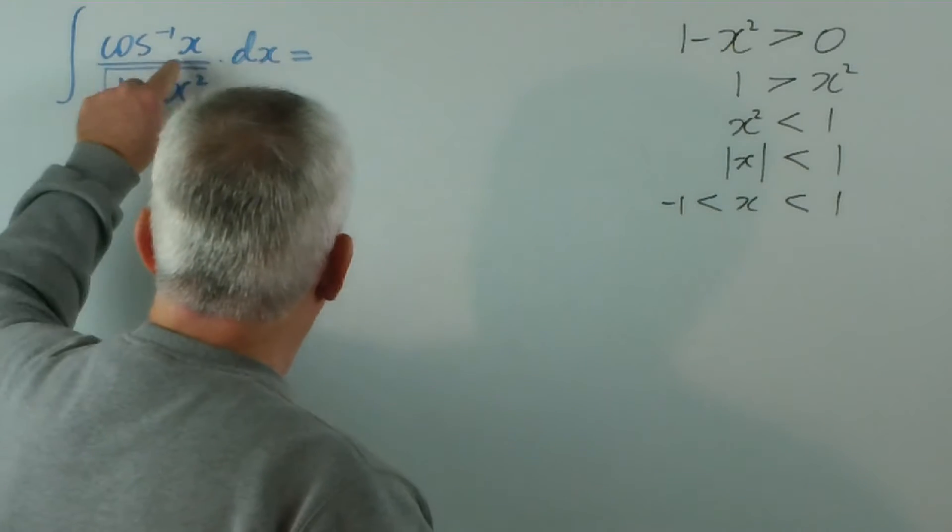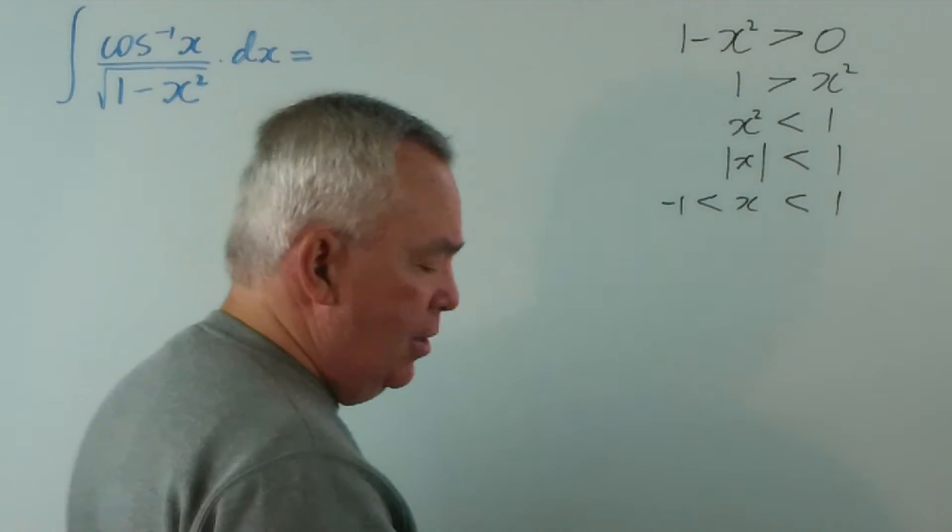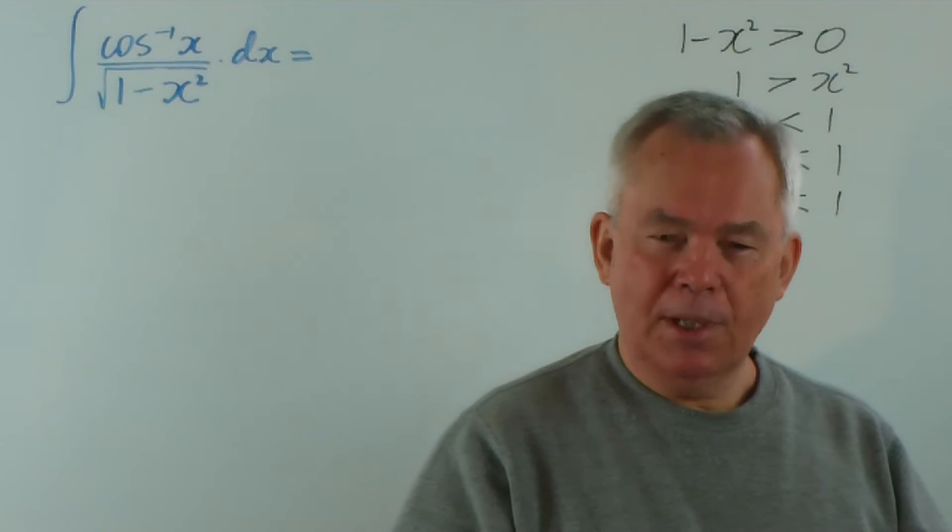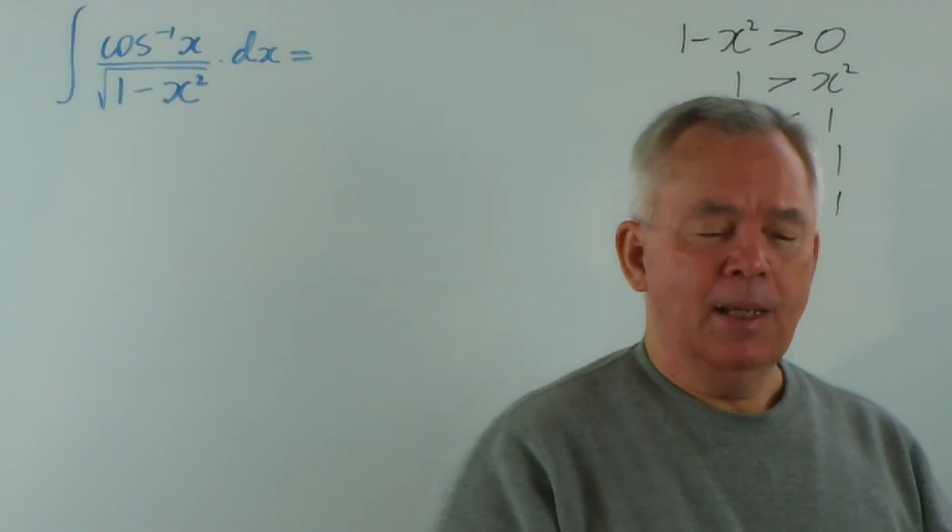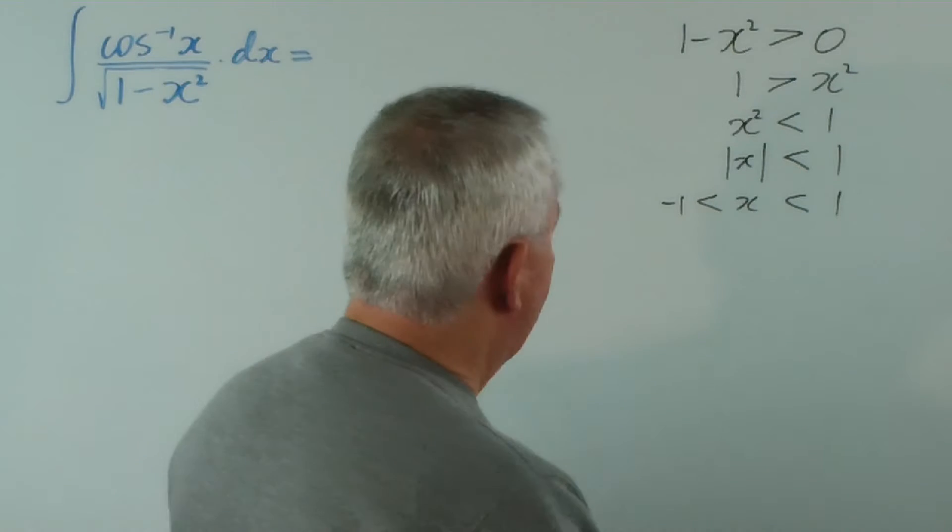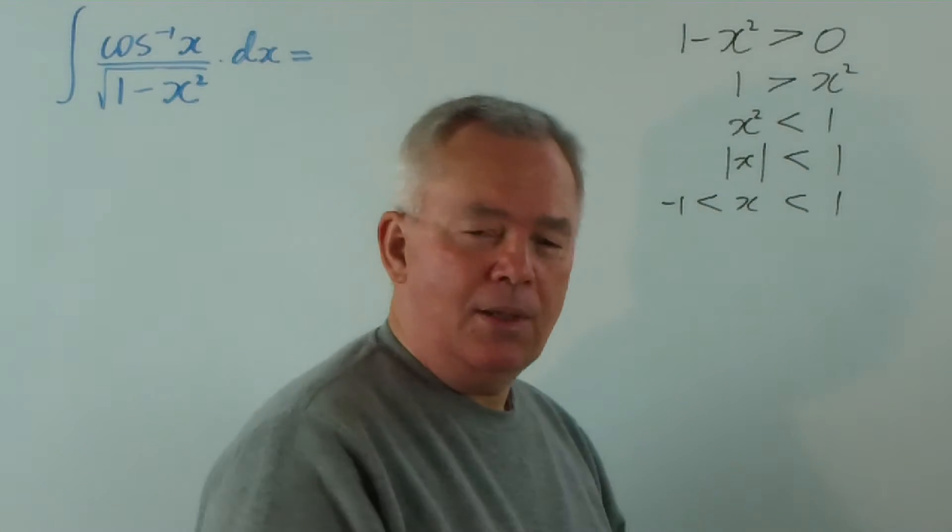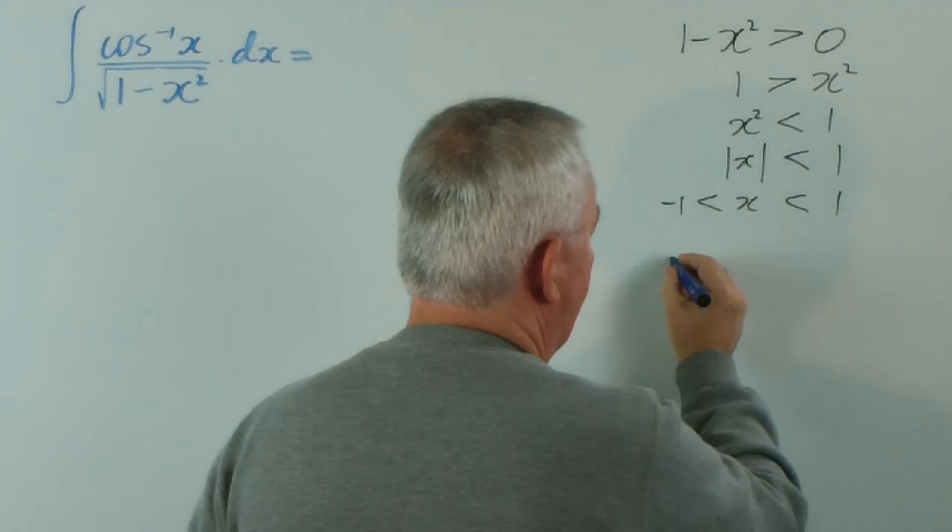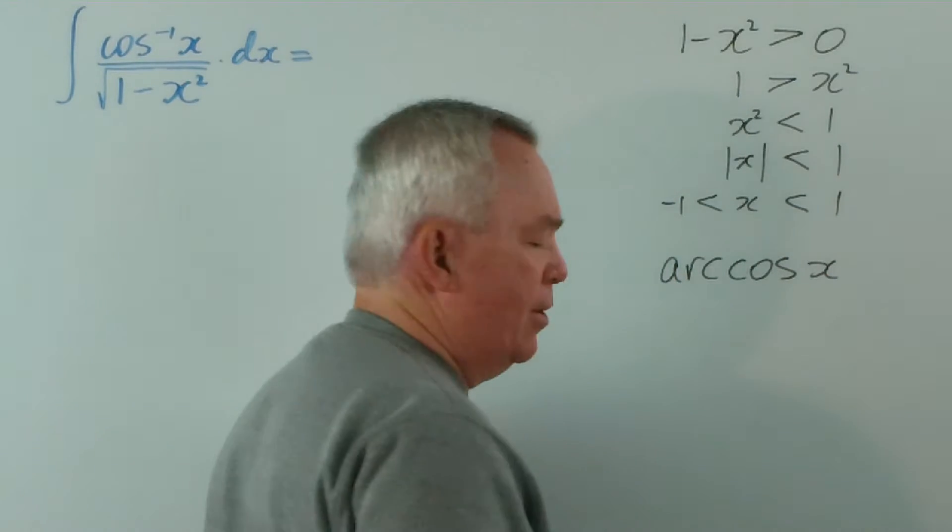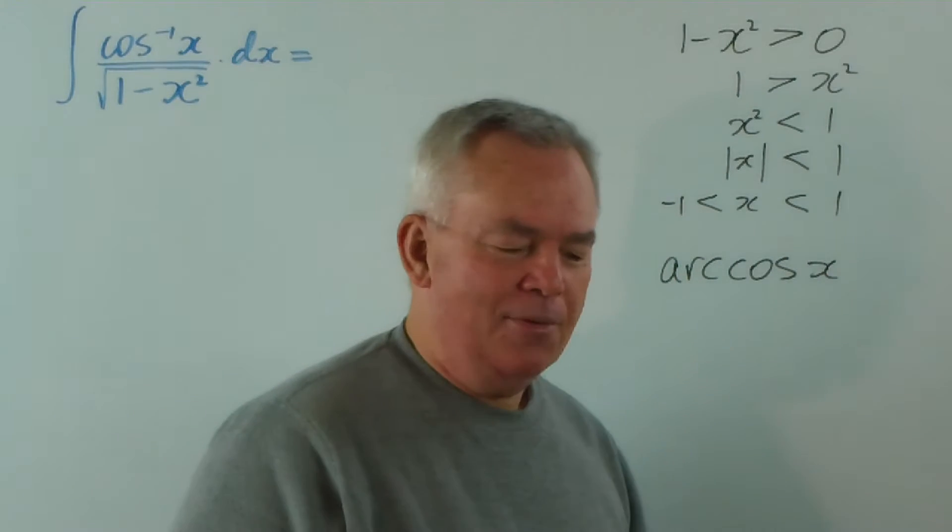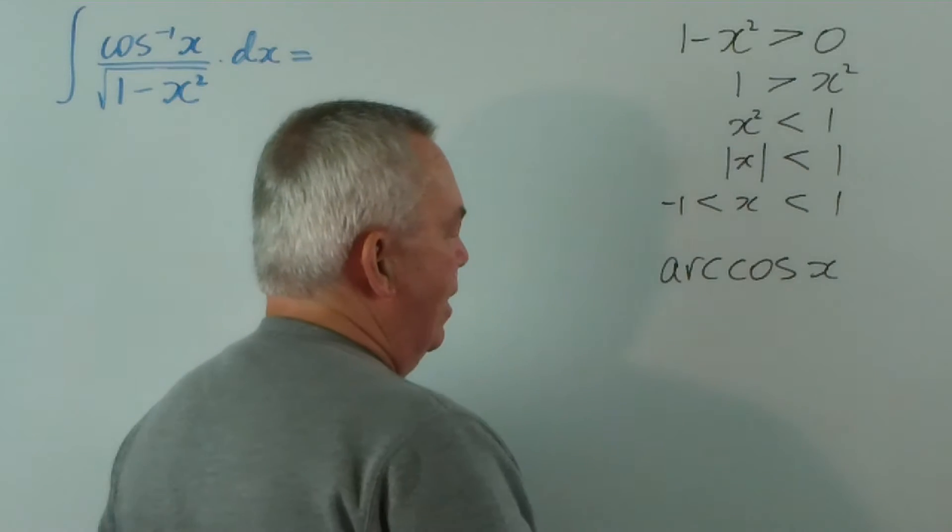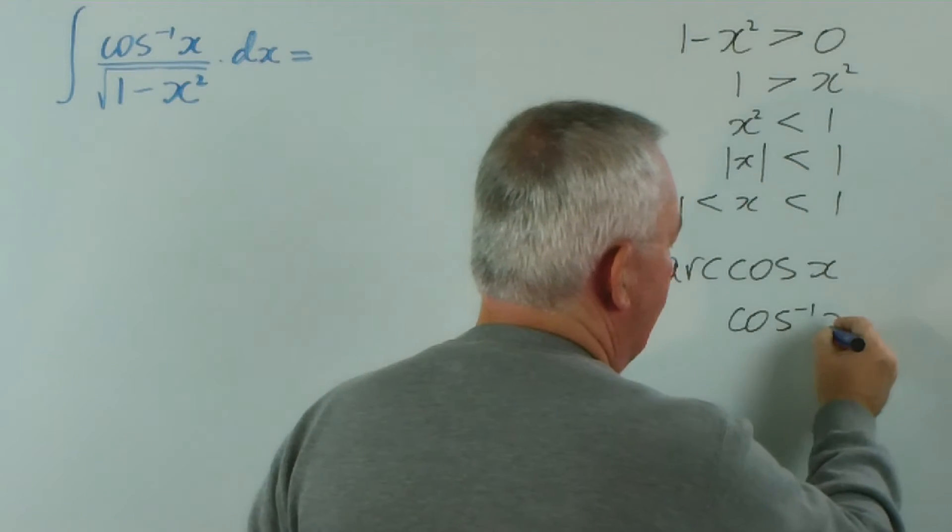Now interestingly, if I look at the inverse cosine, it also has a restriction on its domain. Now before I do that, let me talk about the notation. I know that in the United States you would use the term arc cosine of x, and let me say, as a foreigner, it's actually a very sensible notation.